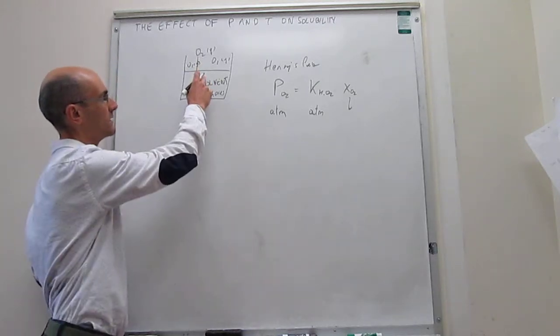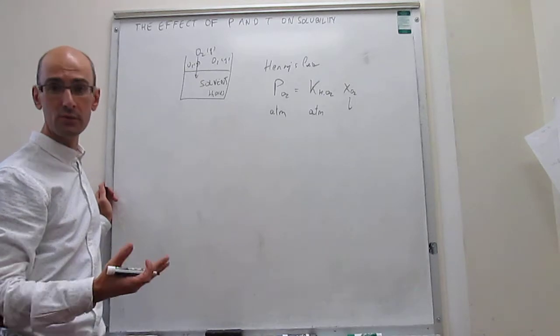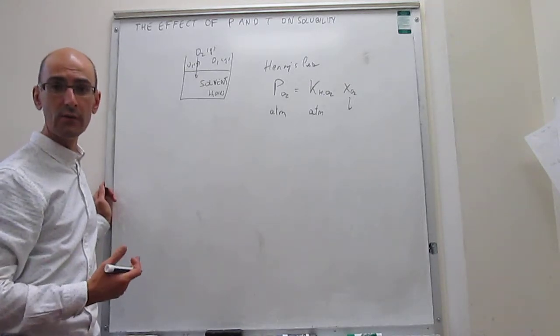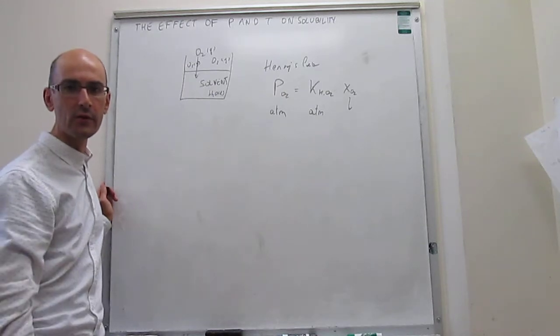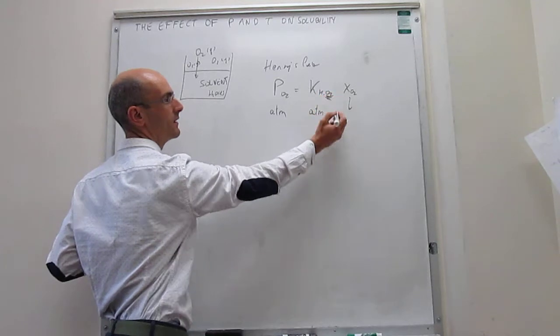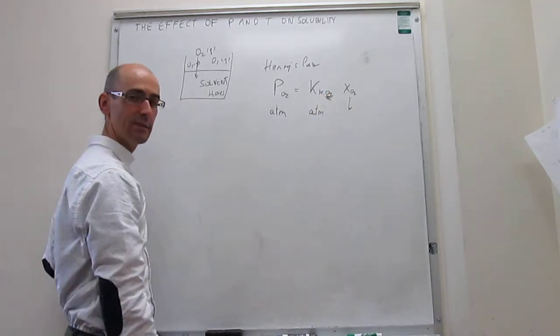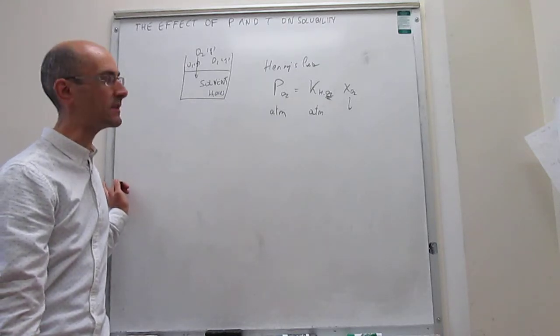The amount of oxygen that you can dissolve in water is going to be different from the amount of CO2 that you could dissolve in water, even if you have the same pressure of O2 and CO2, or argon or any other gas. So this constant depends on the gas that you're trying to dissolve, it depends on the solvent, and it also depends on temperature.